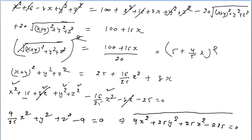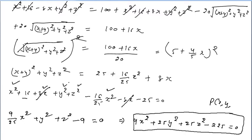This is the required equation of point P(x, y, z). The equation 9x² + 25y² + 25z² - 225 = 0 is the answer.